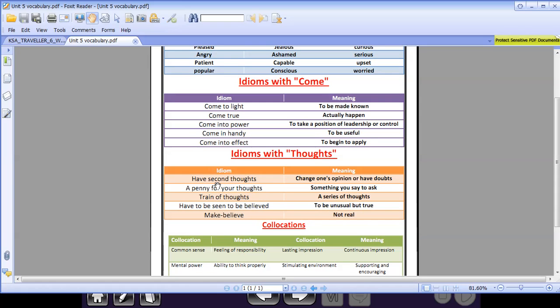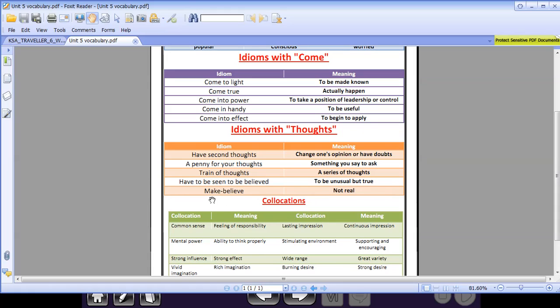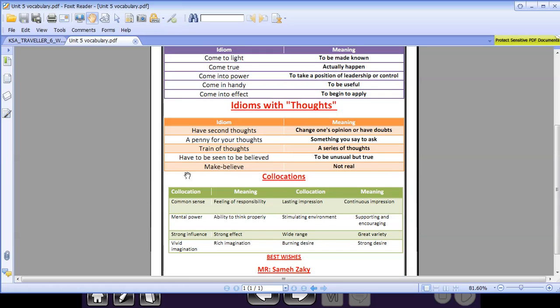Have second thoughts means change one's opinion or have doubts. A penny for your thoughts means something you say to ask. Train of thoughts means a series of thoughts, a group of thoughts. Have to be seen to be believed means to be unusual but true. Make believe means not real. Something that is not real means make believe.